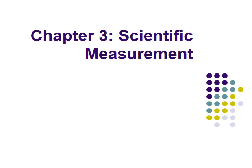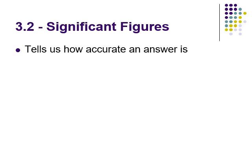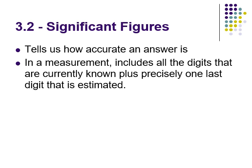We're going to be looking at chapter 3 now: scientific measurement. The big thing with this section is a topic called significant digits, or significant figures, or sig figs. What they do is the number of digits or figures in a measurement tells us how accurate it is. Any time a measurement is taken, we need to include every number that is known and then estimate one more place.